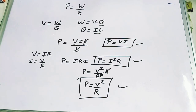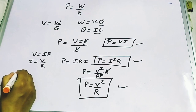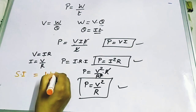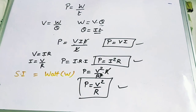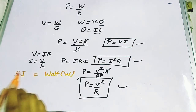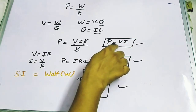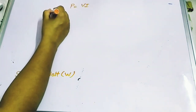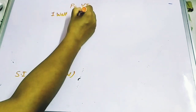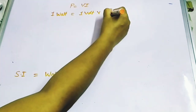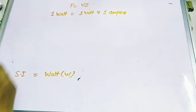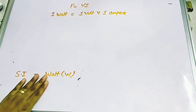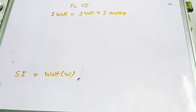What is the SI unit of power? The SI unit of power is the Watt, denoted by capital W. From the formula P = VI, we can define: 1 Watt = 1 Volt × 1 Ampere. So the SI unit of measuring power is the Watt.